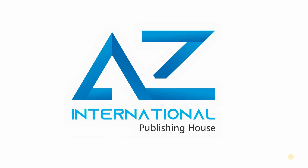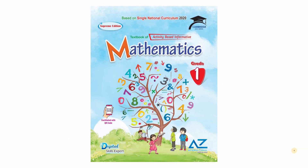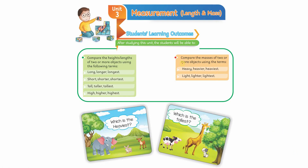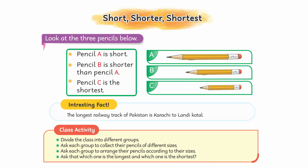Bismillah ar-Rahman ar-Raheem. Assalamu alaikum, dear students. Welcome to AZ International Publishing House. Today we are going to study Mathematics Grade 1, Unit Number 3. Unit 3 is about Measurement, and today our topic is Short, Shorter, Shortest.